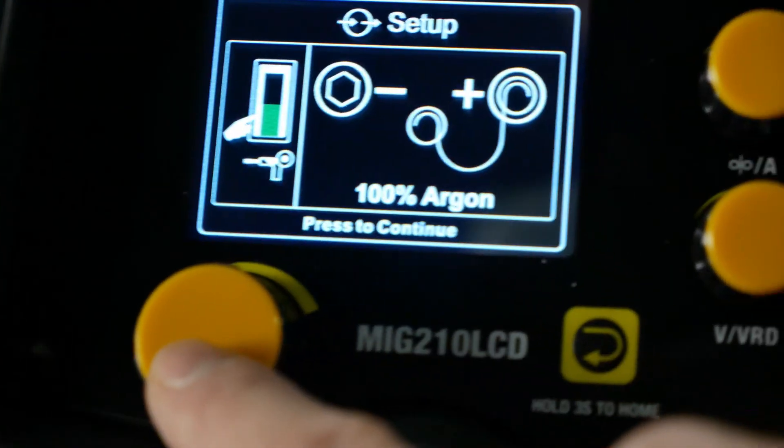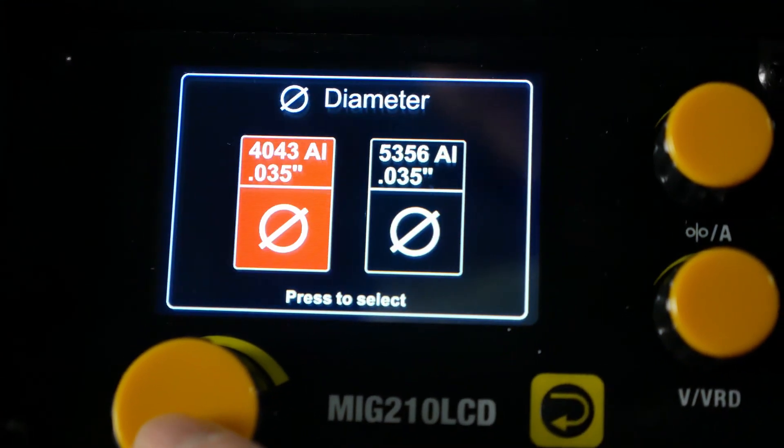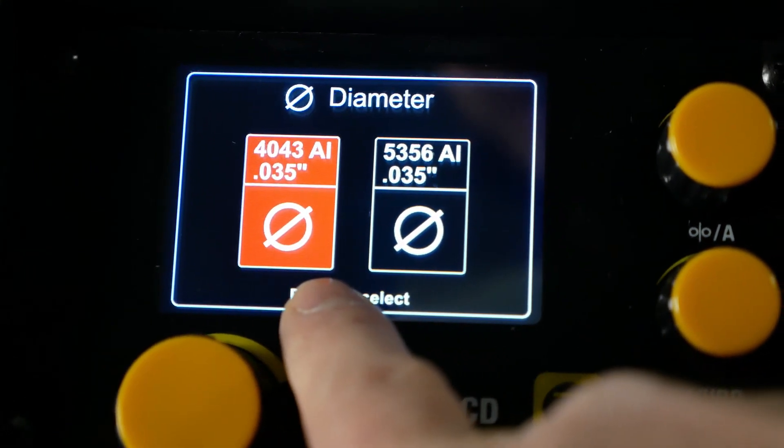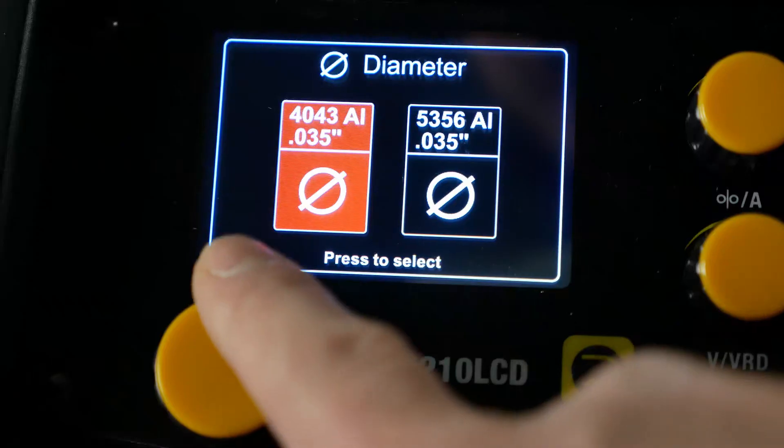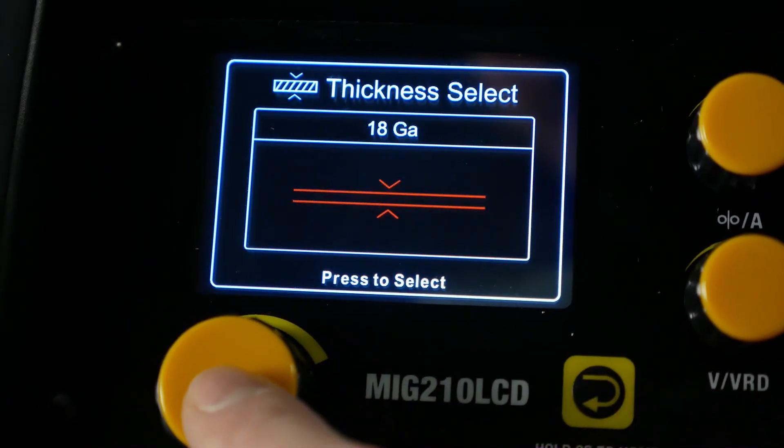Once you're in the aluminum spool gun menu, you'll be prompted to select a 40 or a 50 series filler material for your aluminum spool gun. I'm going to be running a 4043 series aluminum filler material, so I'm going to select the 4043 selection on the screen.